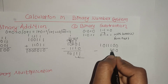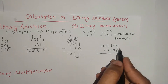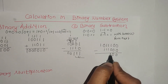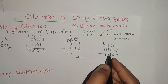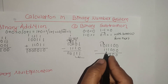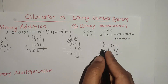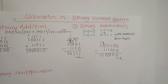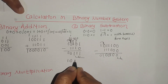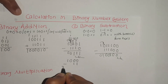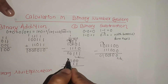Continuing the subtraction: 1, 1, 0, 0, 0, 1. After working through the borrow operations step by step. The result is obtained by subtracting 1 from the upper position. This is the subtraction process.